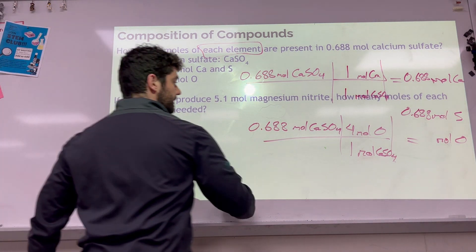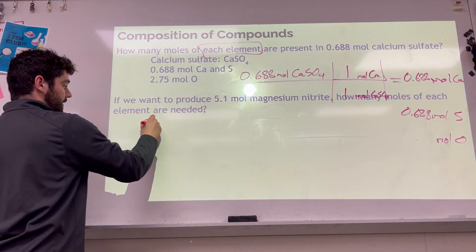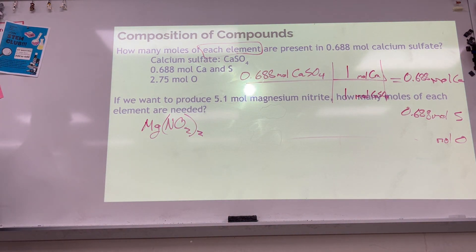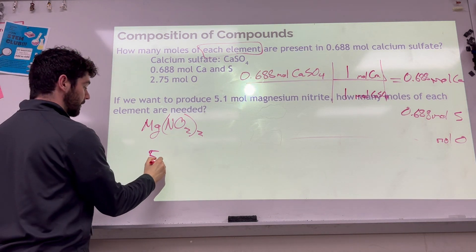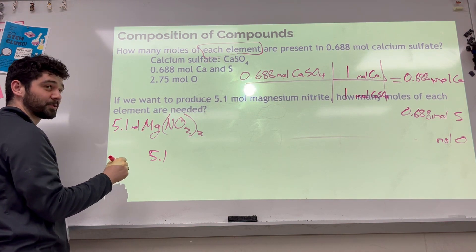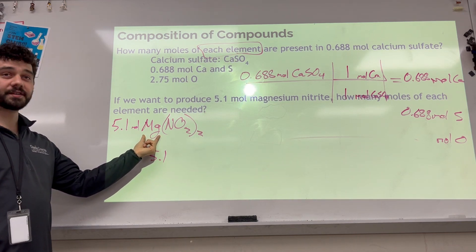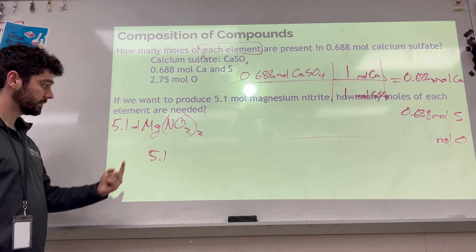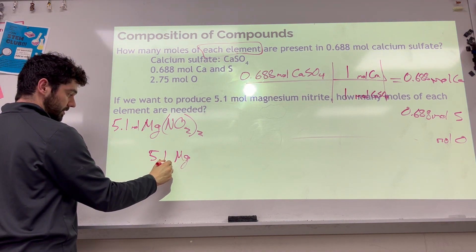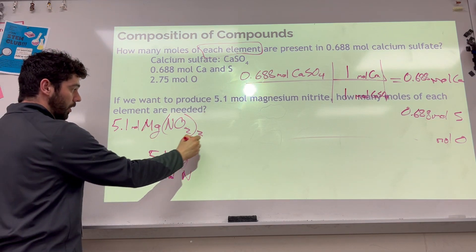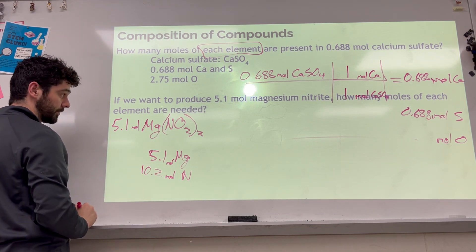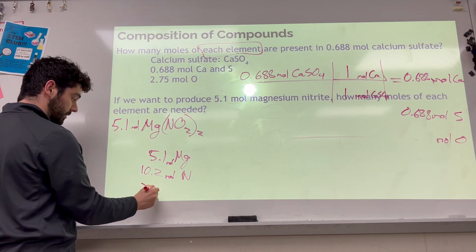I'll do the next one really fast. Magnesium nitrate — if I have 5.1 moles of magnesium nitrate, how many magnesiums are in magnesium nitrate? There's one. So if I have 5.1 of this, I have the same number of moles of magnesium. For the molar ratio of nitrogen, for every one of these I have two of them, which means I should have twice as many moles of nitrogen. And for oxygen it's four, so we deal with that.